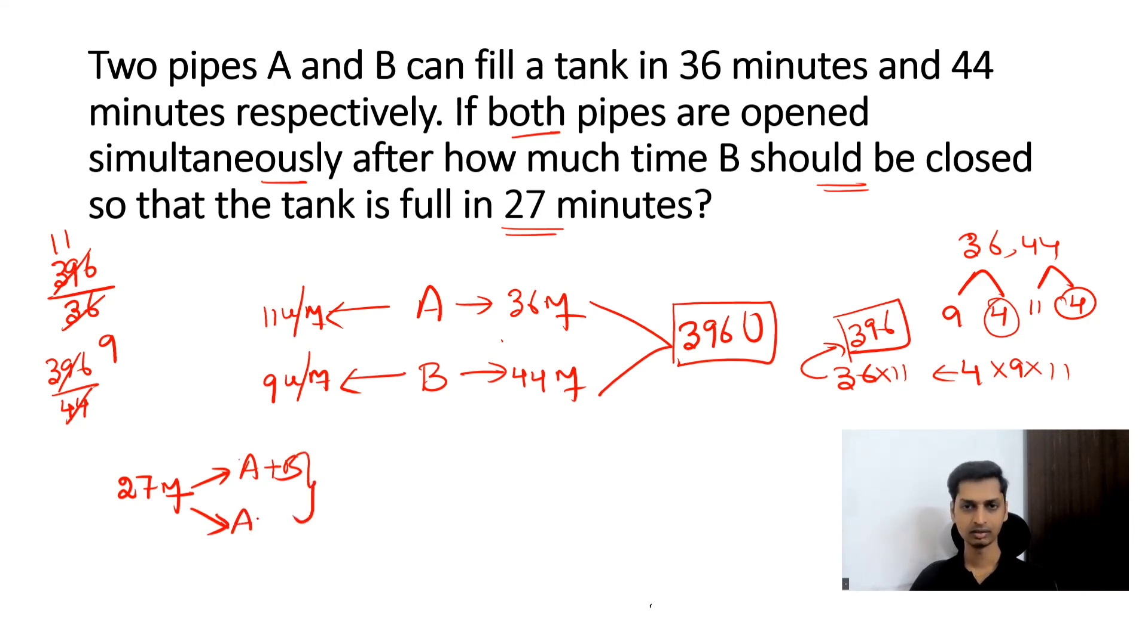Now if you look at this case, in both the cases, pipe A have worked for 27 minutes in total. Pipe A and B have worked for some time, then pipe B is closed, then pipe A completed the remaining work. So in both the cases, pipe A is working. So pipe A totally worked for 27 minutes.